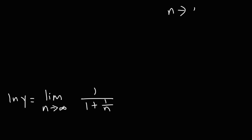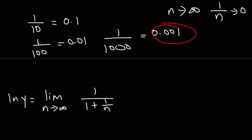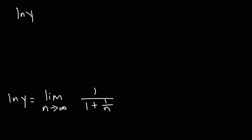As n goes to infinity, what happens to 1 over n? If n is 10, then 1/10 is 0.1. If n increases to 100, it's 0.01. At 1,000, it's 0.001. As n gets larger and larger, 1 over n gets smaller and smaller, approaching 0. So applying this to our limit, we replace 1 over n with 0, giving ln y equals 1 over 1 plus 0, which is 1. The natural log of y equals 1.